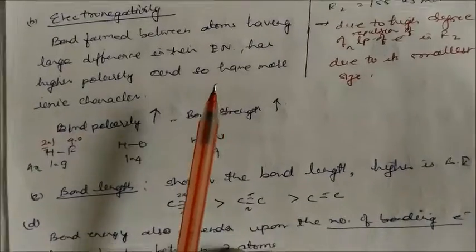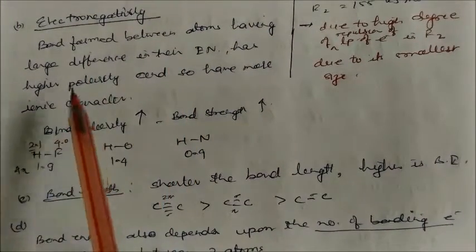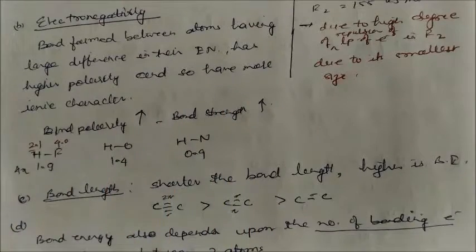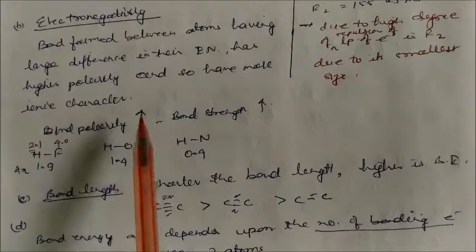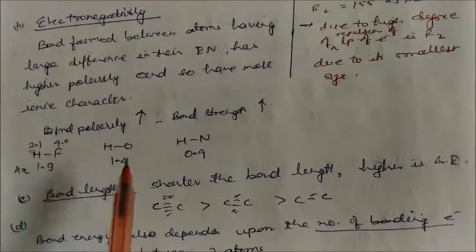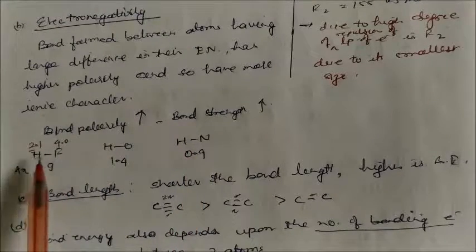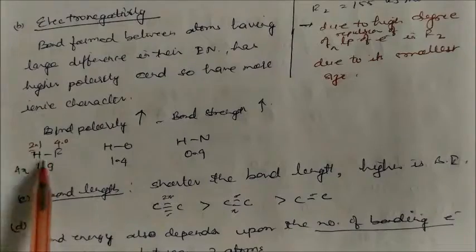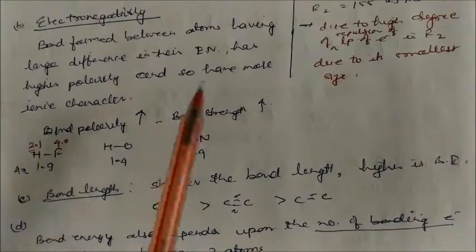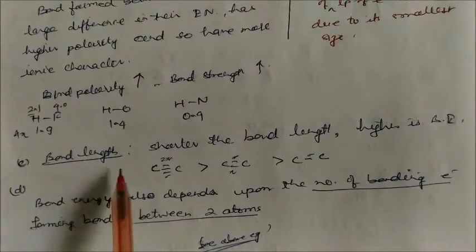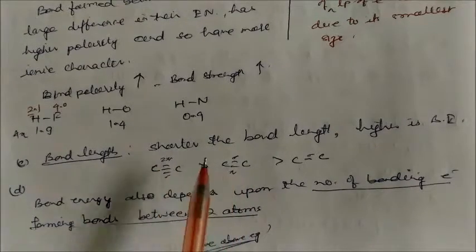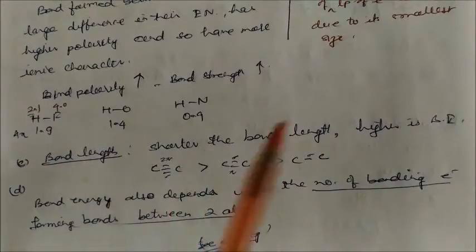Another factor is electronegativity — bonds formed between atoms with a large difference in electronegativity have high polarity and more ionic character, meaning higher bond strength. For example, comparing H–F, H–O, and H–N: the electronegativity difference for H–F is 1.9 (2.1 vs 4.0), which gives high polarity and high bond energy, while smaller differences give lower bond energy. Bond length also matters — shorter bond length means higher bond enthalpy. Triple bonds have more energy than double bonds, followed by single bonds; but sigma bonds are stronger than pi bonds individually.